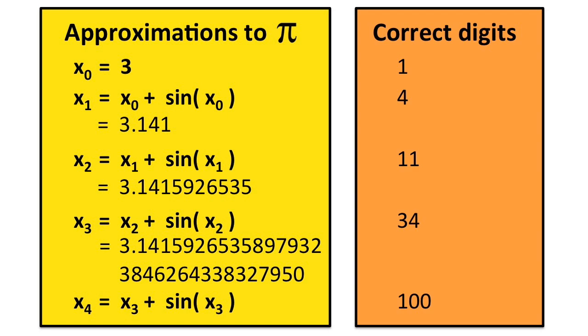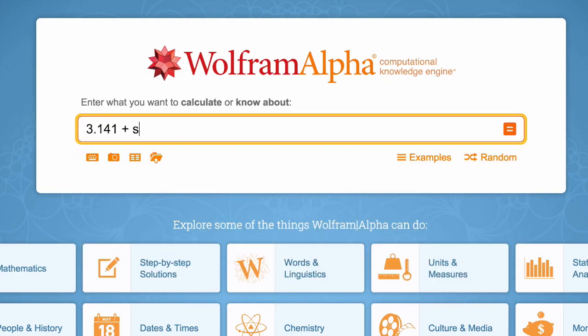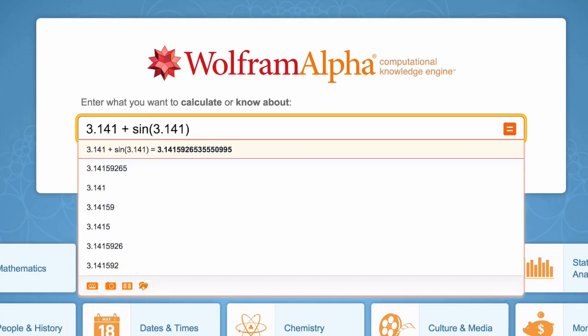In fact, the number of correct digits roughly triples with each step. Of course, your calculator may not display enough digits, so using a tool like Wolfram Alpha is a convenient way to generate as many digits as you want.